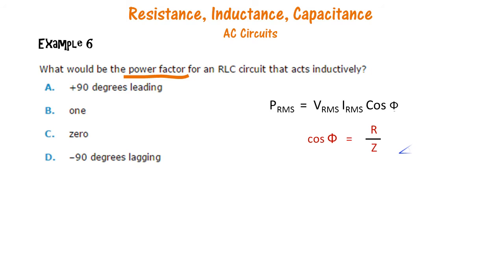Cos phi is the power factor and this is R by Z. So it can have the value here only 1 or 0 in the given options. So for a purely inductive circuit, R is 0. So the correct answer is 0.